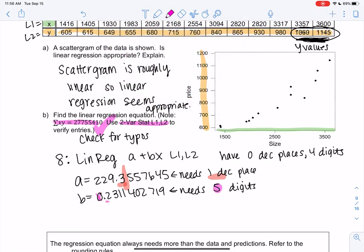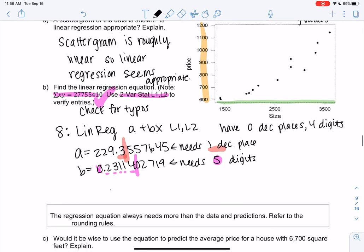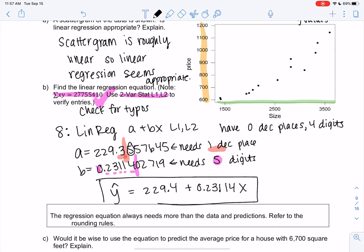So five digits. So zeros in the front don't count. One, two, three, four, five. If you hate these rounding rules, just keep a ton of decimal places. You can always have more, you just can't have less. So Y hat is equal to 229.4 because we're going to round up because of the five, plus 0.23114X. Don't forget the X. And that's my regression equation.